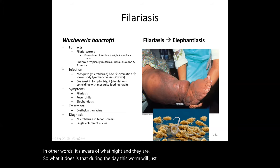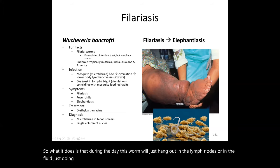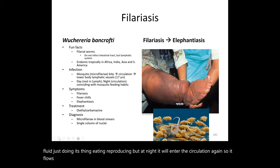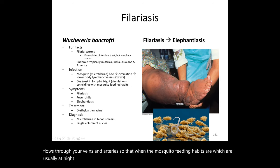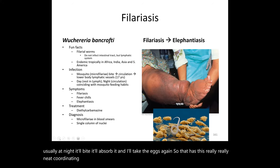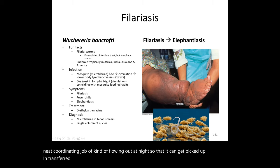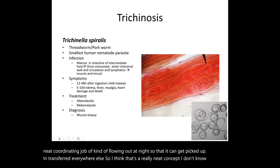Remarkably, the worm has a circadian rhythm — it's aware of night and day. During the day, it just hangs out in the lymph nodes, eating and reproducing. But at night, it re-enters the circulation — flowing through your veins and arteries — specifically timed to coincide with the mosquito's nocturnal feeding habits. The mosquito bites, absorbs the eggs, and transfers them to a new host. It's a really neat coordinating mechanism.